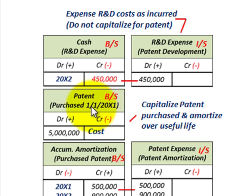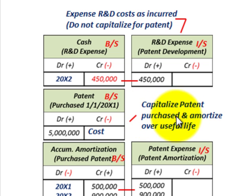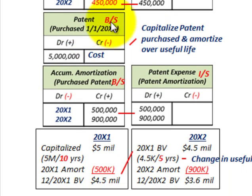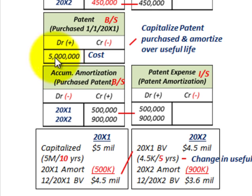The next thing to deal with is the amortization — the capitalization of the patent and its amortization. You capitalize the patent at its purchase cost and amortize it over its useful life, and we're going to have a change in useful life. For our patent on the balance sheet, purchased on 1-1-20x1, we debit it for $5,000,000 — that was its cost — recording the patent on the balance sheet at $5,000,000.